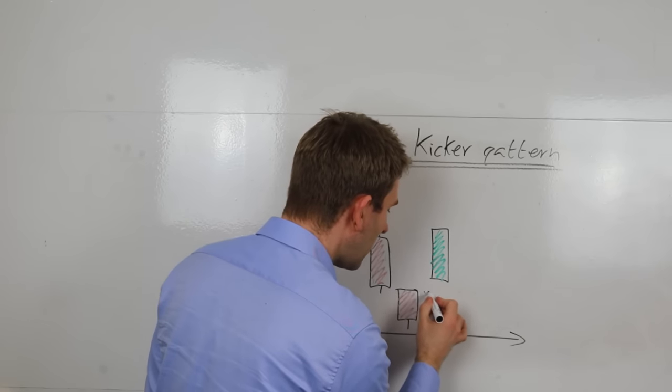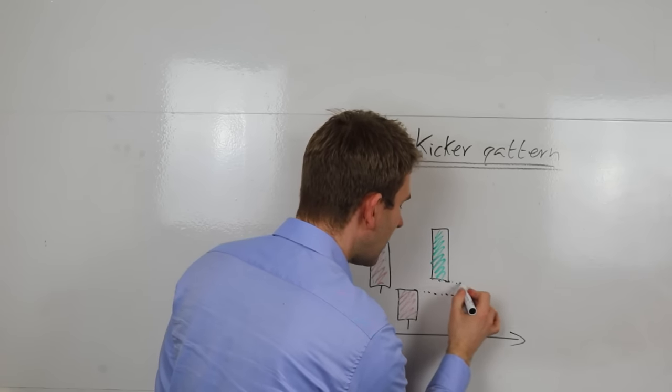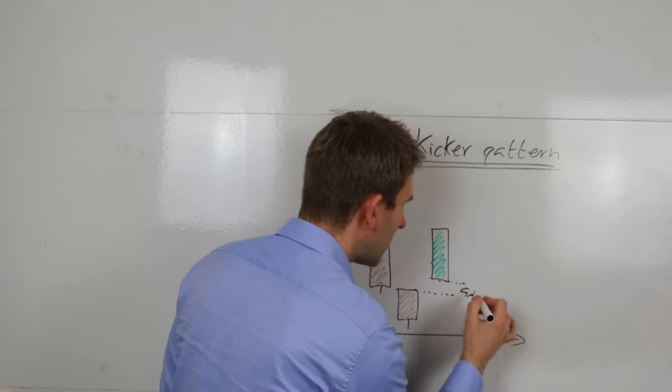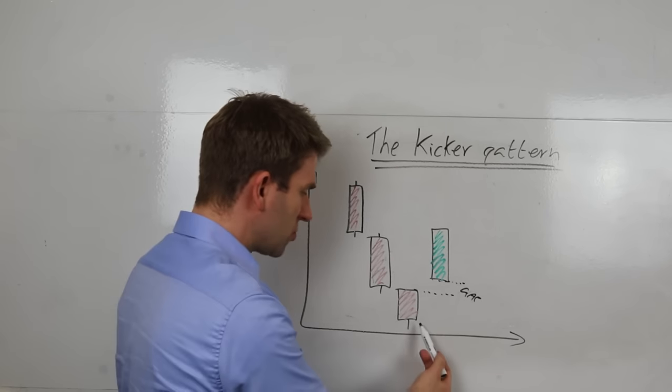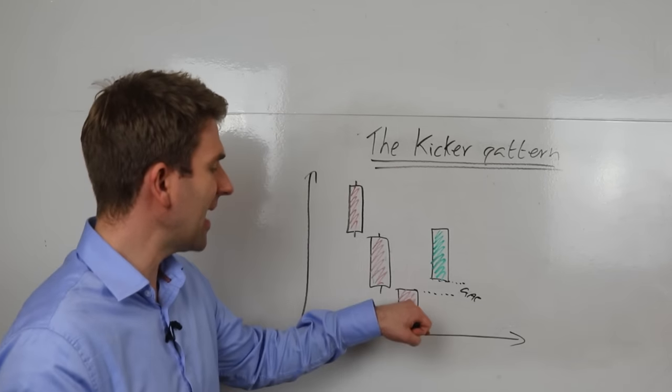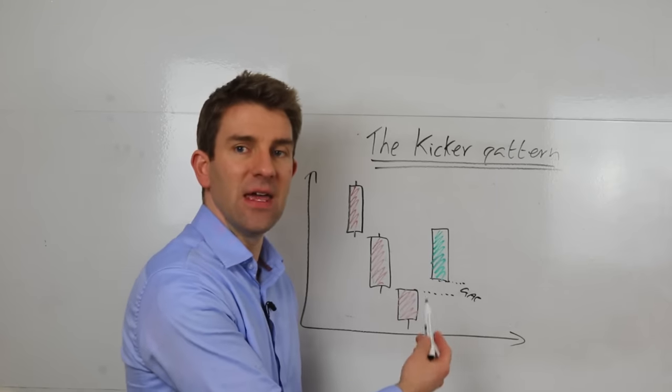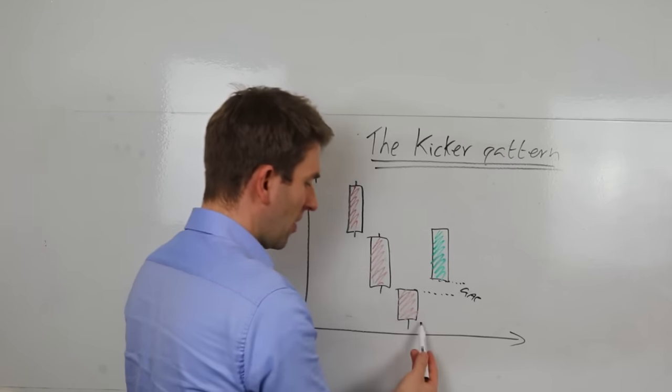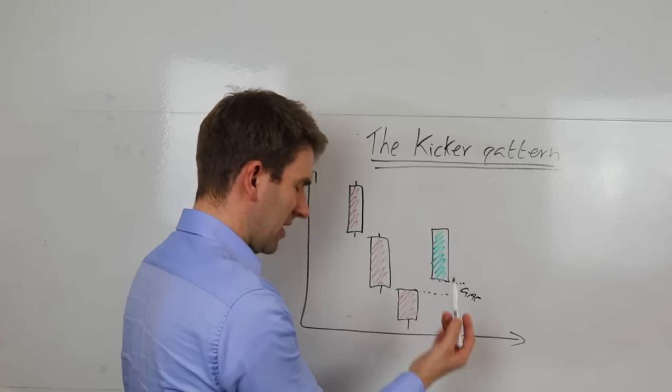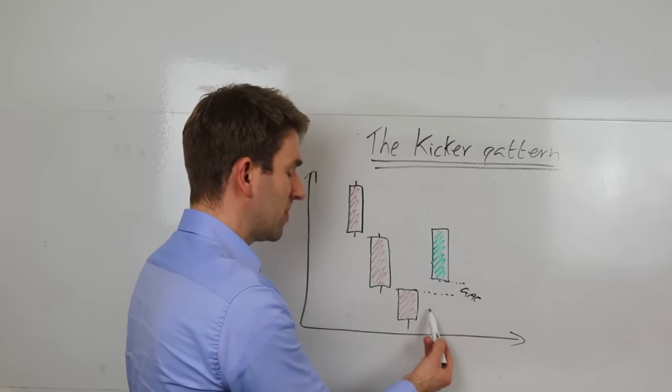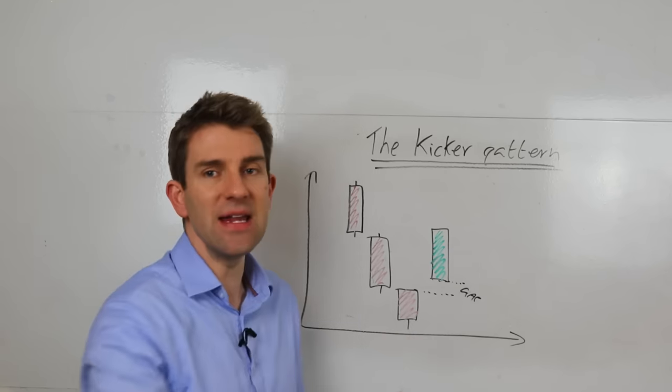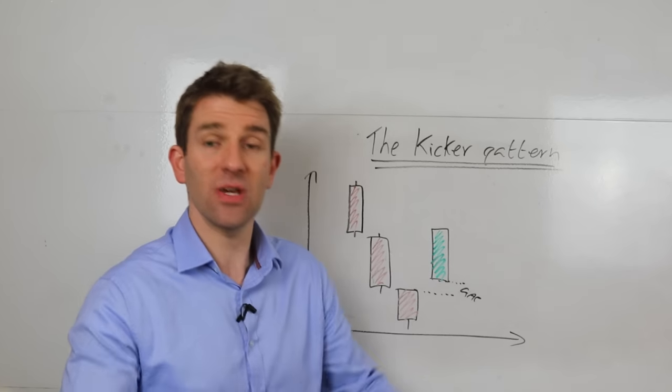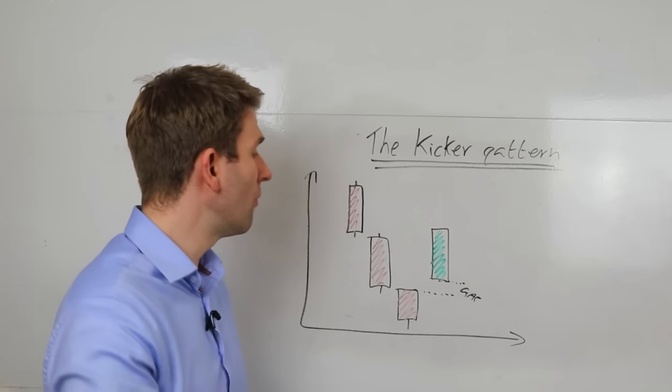The most important part of this kicker pattern is this gap here. The price should have closed at lows and it should now gap above the high of the previous candle. So not just above the close—the close would be here on a red candle—we gap up and that should be a gap. This is a gap outside of the range to the upside. That's the important first criteria of this kicker pattern.